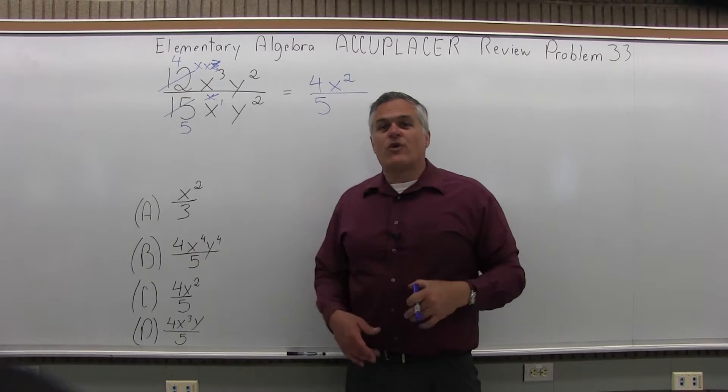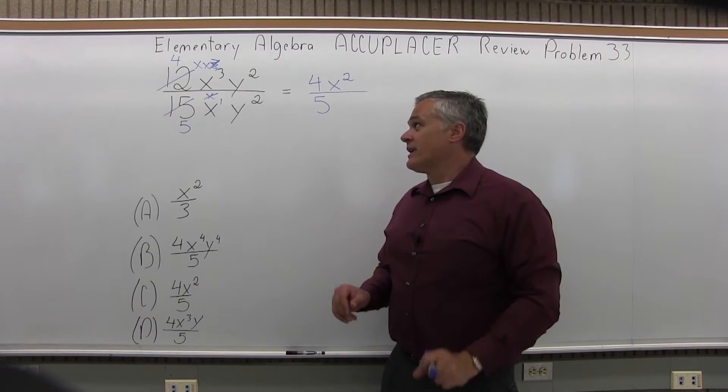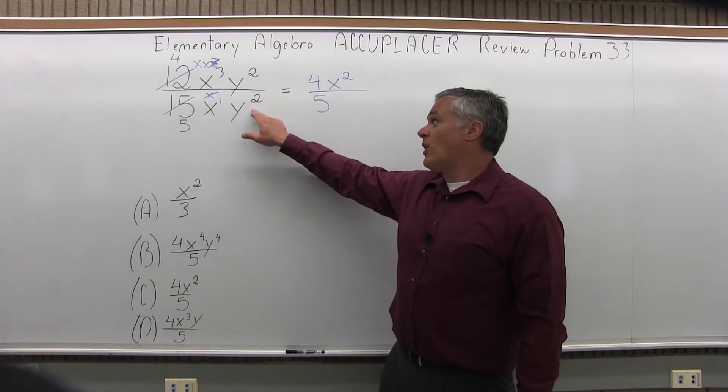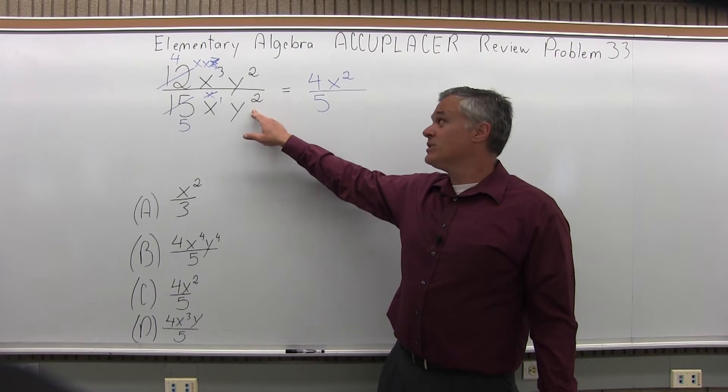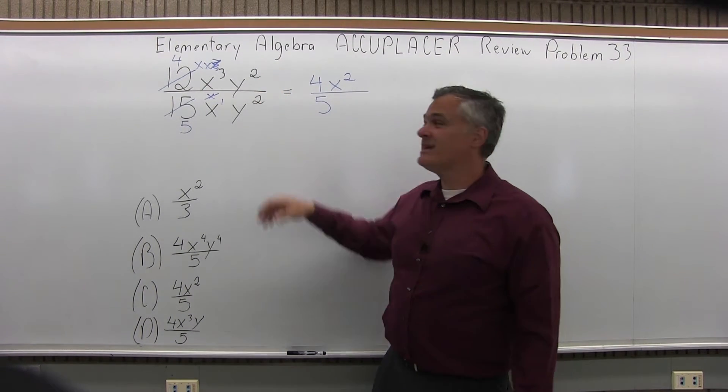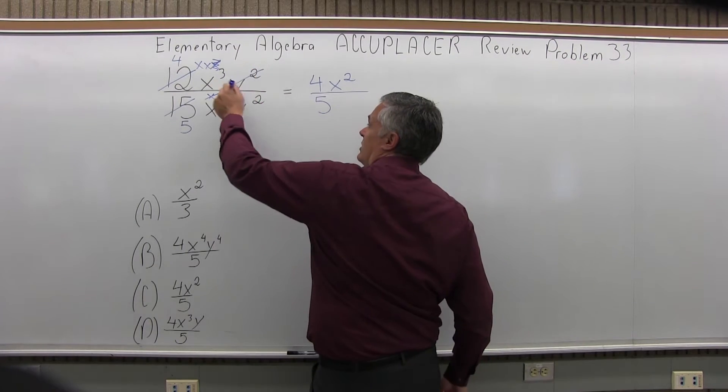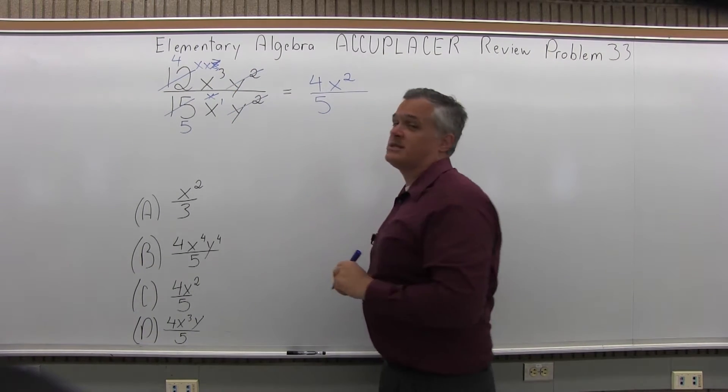So now I'm done with the x's, now focus on the y's and pay attention to nothing else. I have y to the second over y to the second. Well, that's a complete match. Whatever you have that value over itself, they cancel completely. The y to the second in the top cancels completely the y to the second in the bottom.